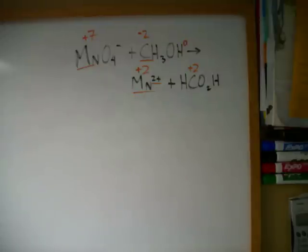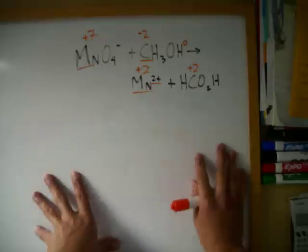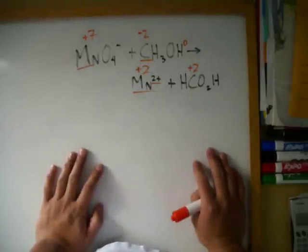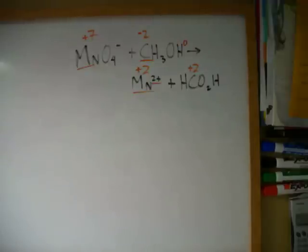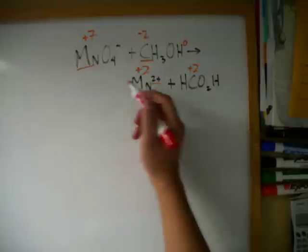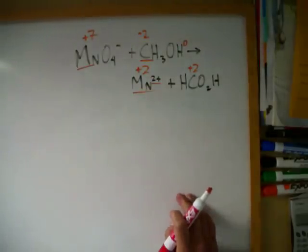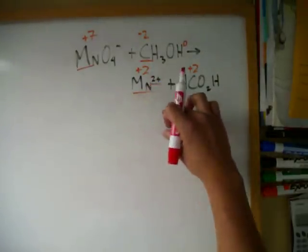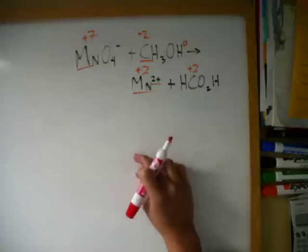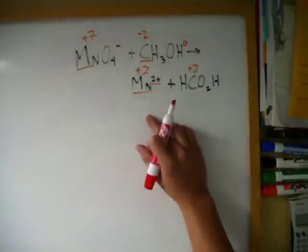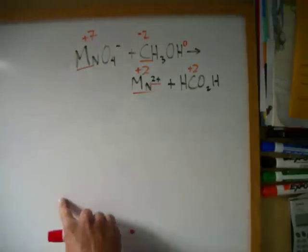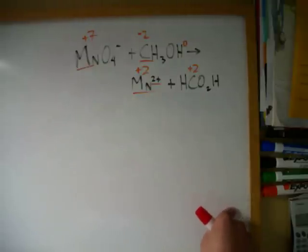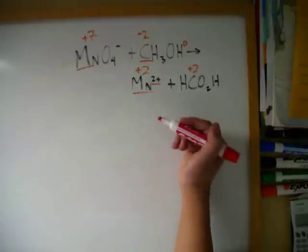We've done our first steps. Now we have to break it into half reactions. Half reactions — this is where the magic happens. We make one for oxidation and one for reduction. We don't really need to know which one's being oxidized and which one's being reduced, because we're going to simplify it later into a balanced redox reaction.